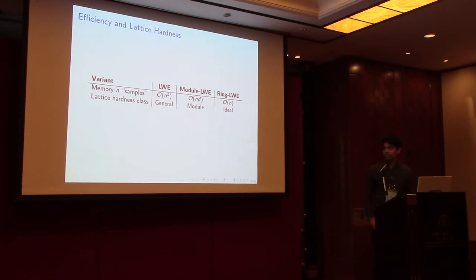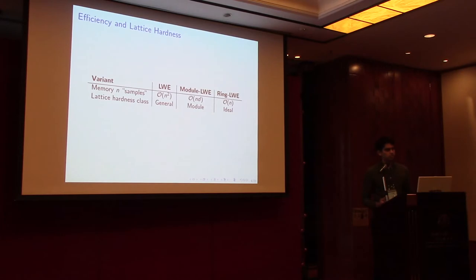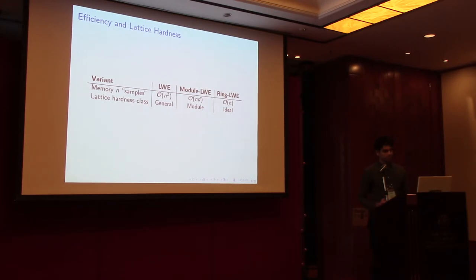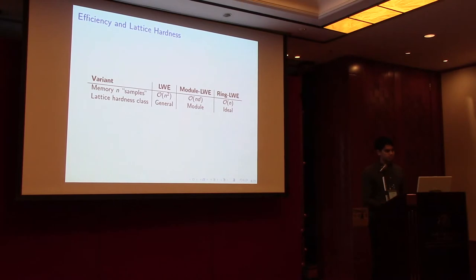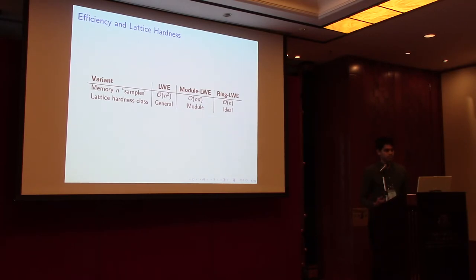Here's a summary of the efficiency and lattice hardness of these LWE variants. Reading left to right, we go from least efficient to most efficient. On the other hand, LWE is at least as hard as finding short vectors over general lattices; module LWE the same but for module lattices; and ring LWE the same but for ideal lattices. So as we go left to right, the hardness guarantee becomes potentially less strong.